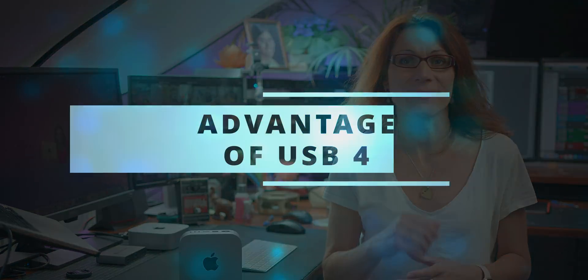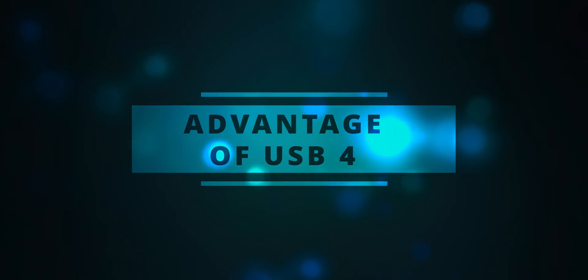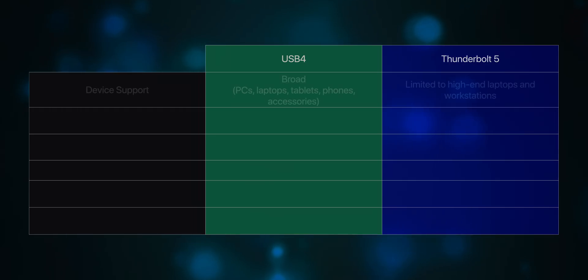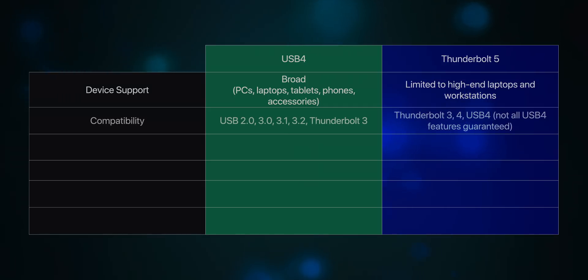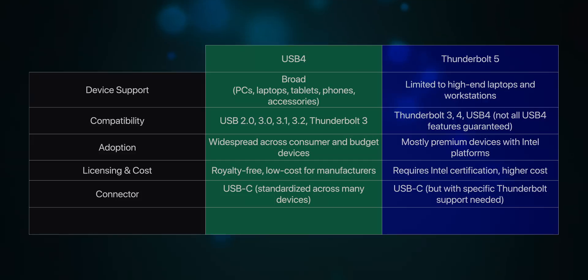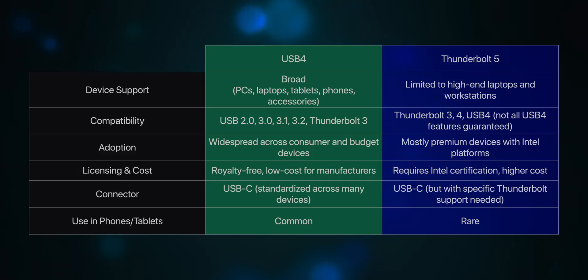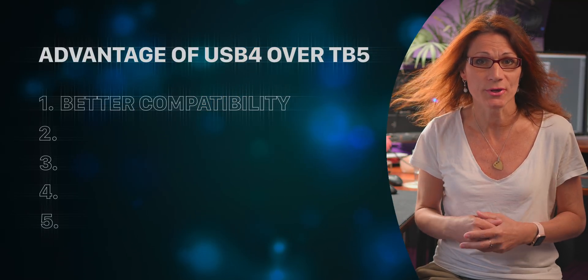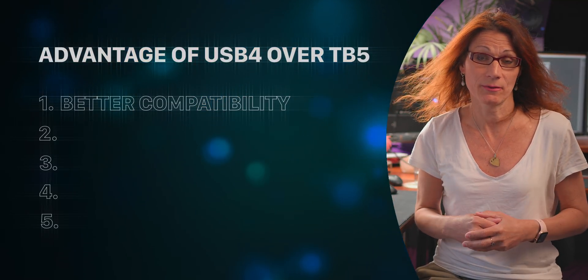On the other hand, what are the advantages of a USB 4 external SSD over Thunderbolt 5? First, better compatibility across devices. USB 4 is backwards compatible with USB 3, USB 2 and Thunderbolt 3 in most cases, making it more universally usable across PCs, Macs and many other devices. Thunderbolt 5 requires Thunderbolt support on the host device to unlock full performance. On non-Thunderbolt devices, it may fall back to slower USB modes or not work at all.